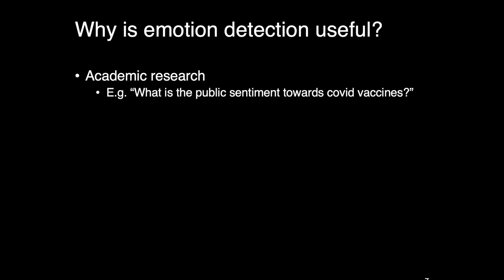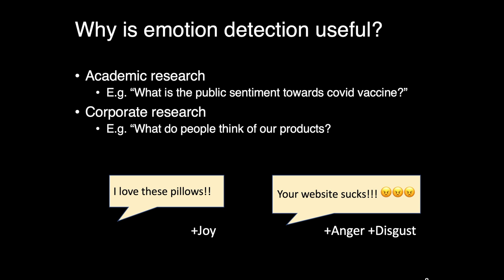The next topic is why is emotion detection useful? If you are an academic researcher, you may want to know how the public perceives a new public health issue. For example, what is the public sentiment towards COVID vaccines? And if you're doing corporate research, you may want to know how people feel about your products. It would be nice to quantify and classify user utterances in terms of emotion. For instance, I love these pillows conveys a sense of joy, and your website sucks conveys a sense of anger and disgust. Notice how emotions can be expressed by punctuation marks and emojis and distress words like sucks. All of these features are good projectors when you're building an emotion detection model.